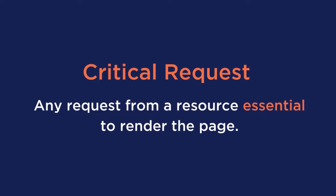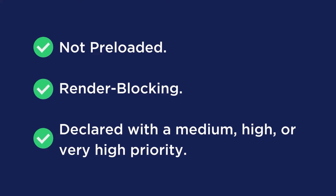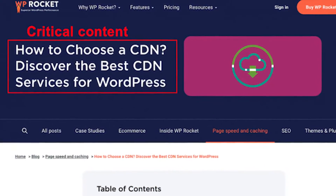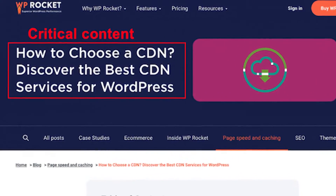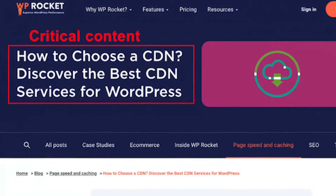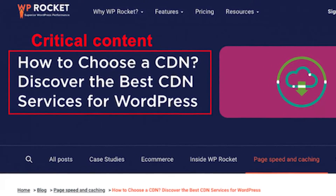A critical request is any request from a resource essential to render the page. According to Lighthouse, this is defined as not preloaded, render blocking, or declared with a medium, high, or very high priority. To give you an example, this could be the heading of a blog post or the image from a hero banner that triggers the critical request.